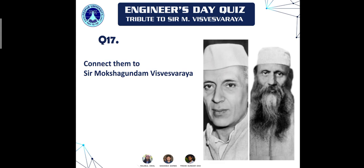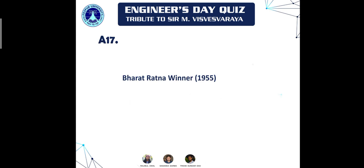Question seventeen, probably the easiest: connect the given images to Sir M. Visvesvaraya. The pictures shown include Bhagwan Das and Jawaharlal Nehru. The connection is that M. Visvesvaraya, Jawaharlal Nehru, and Bhagwan Das all received the Bharat Ratna in 1955. These are the three recipients of the second-ever Bharat Ratna award.